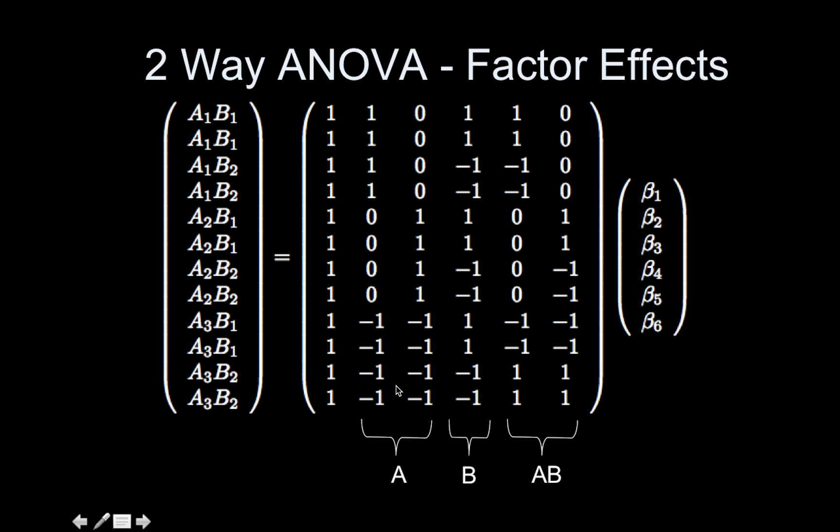So these are the two regressors I would test if I want to test a main A effect in this model. B just has this one. I chose level two of B as the baseline, so that's negative one. So this one just goes one one minus one minus one, one one minus one minus one, so on and so forth. And so I only have one regressor for B because B had two levels.